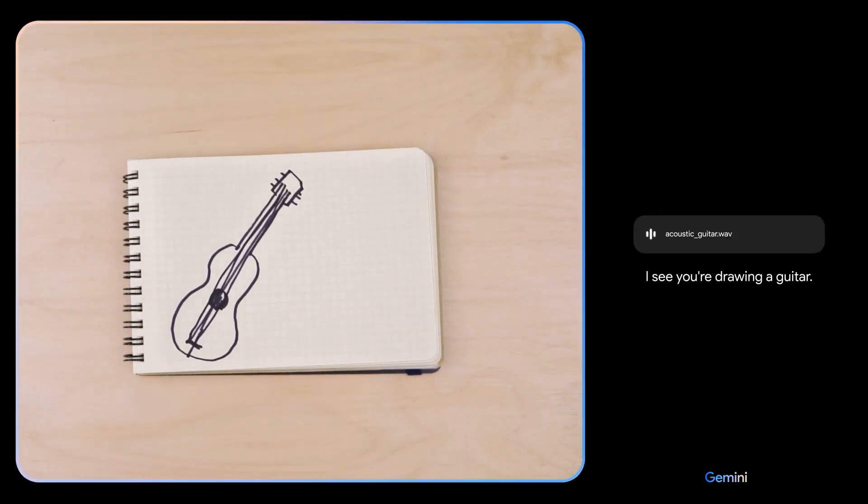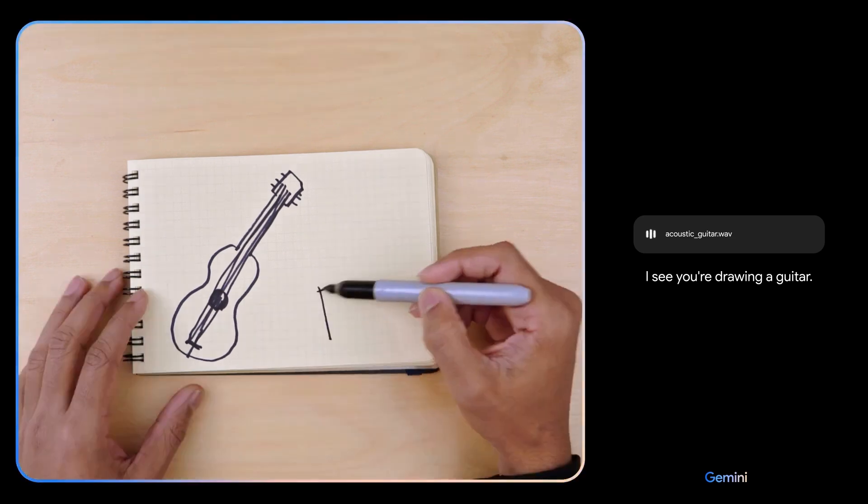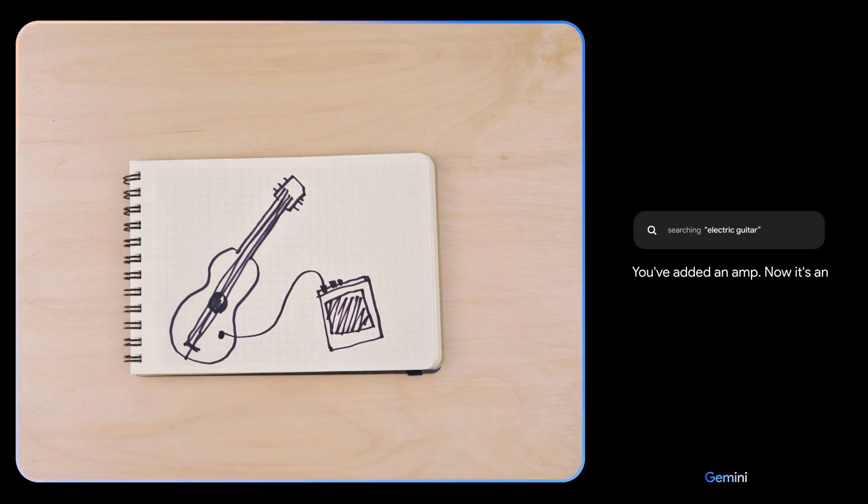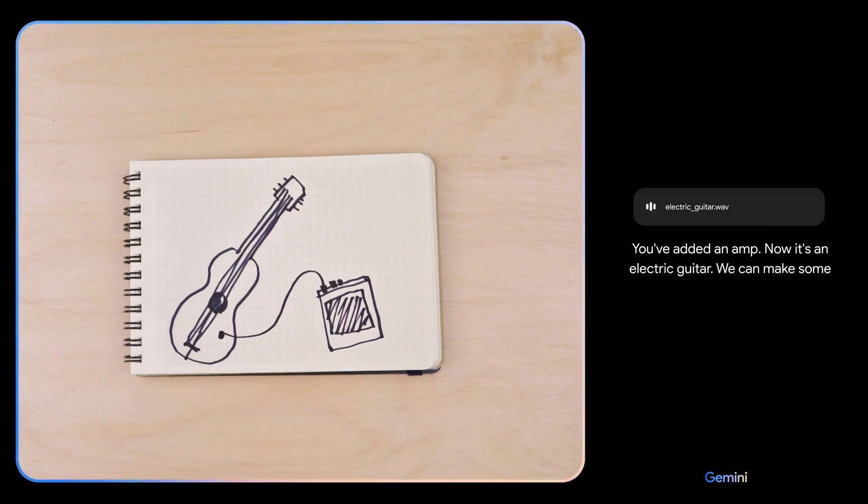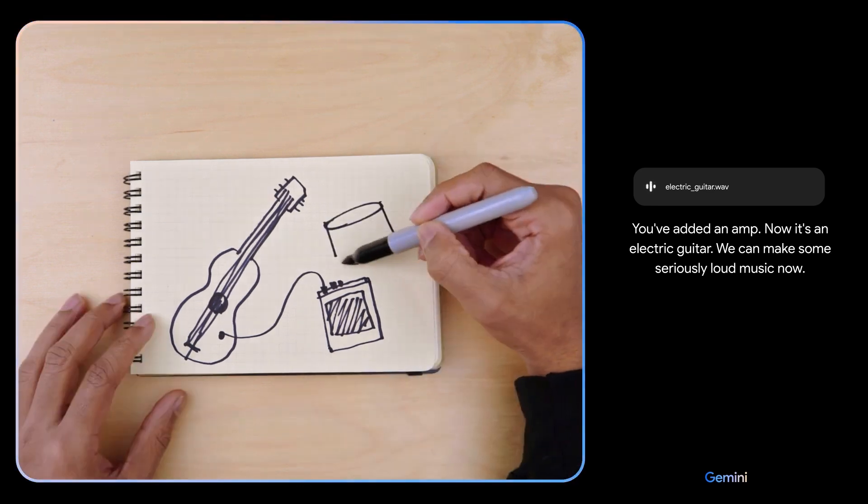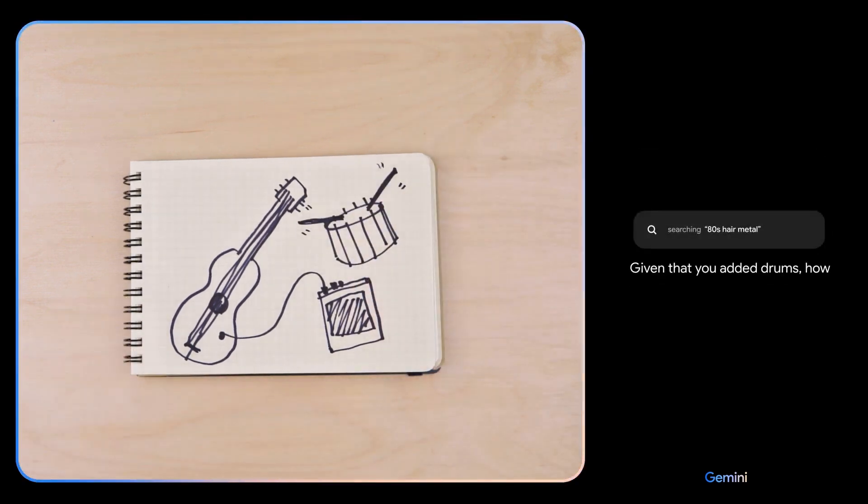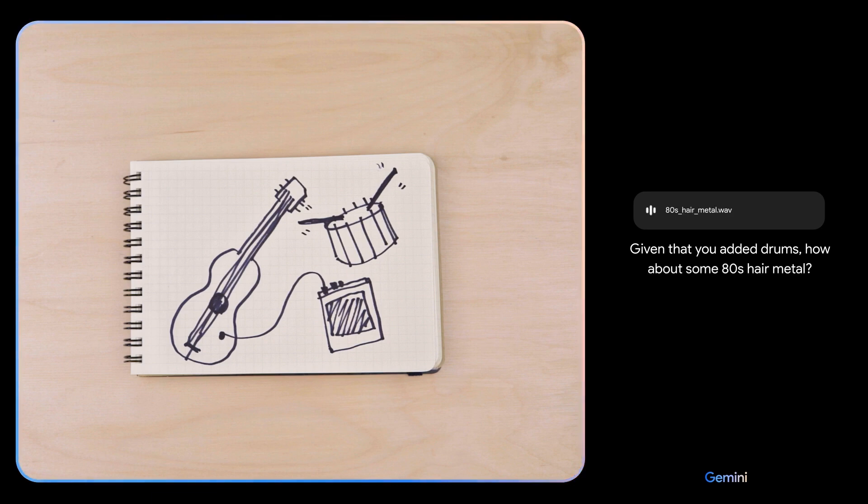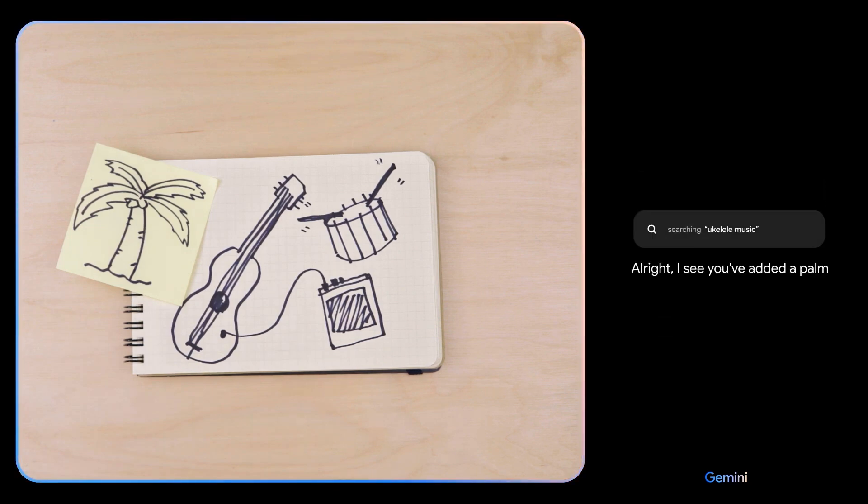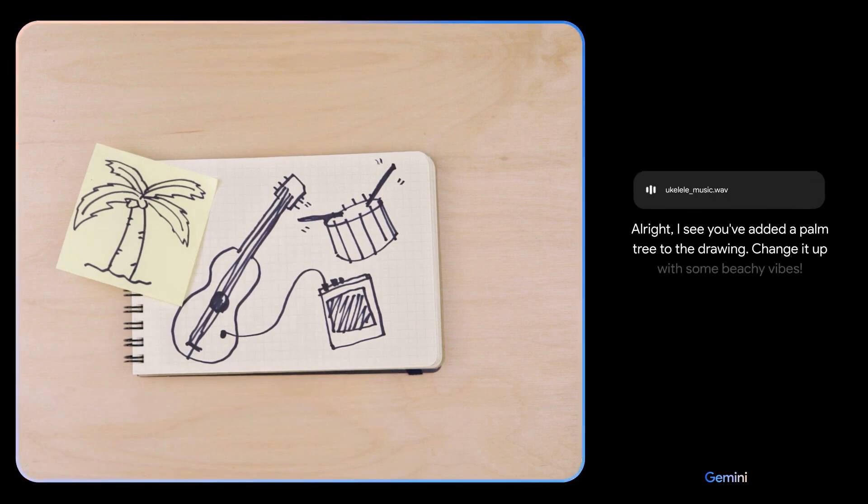I see you're drawing a guitar. You've added an amp. Now it's an electric guitar. We can make some seriously loud music now. Given that you added drums, how about some 80s hair metal? Alright, I see you've added a palm tree to the drawing. Change it up with some beachy vibes.